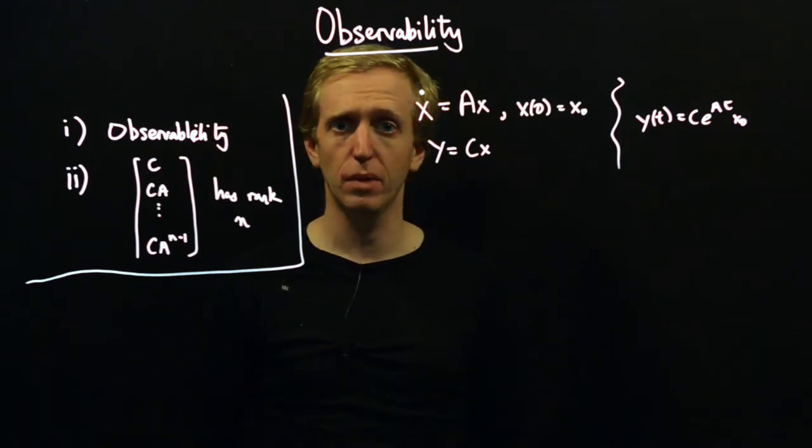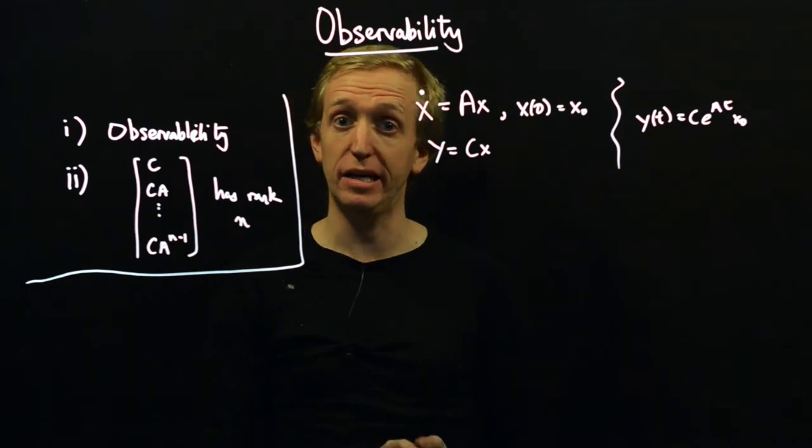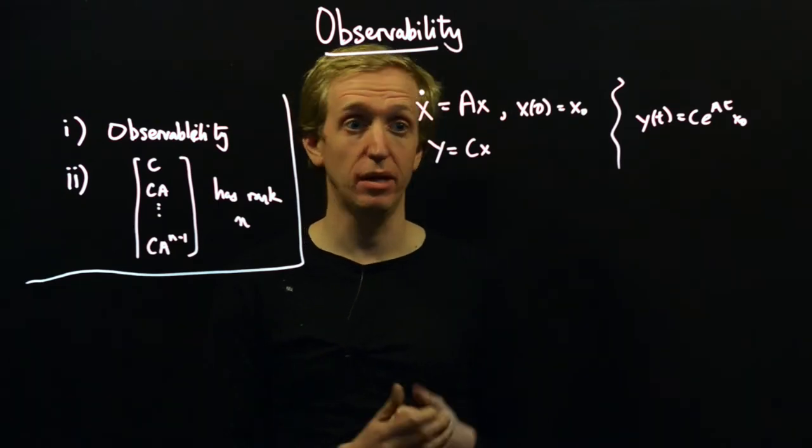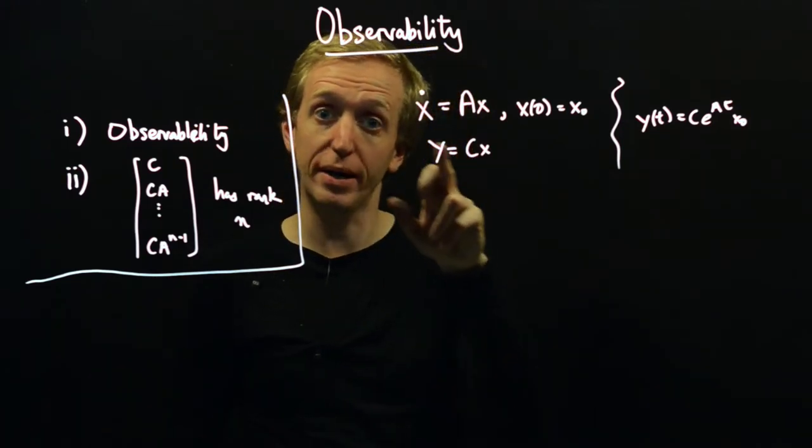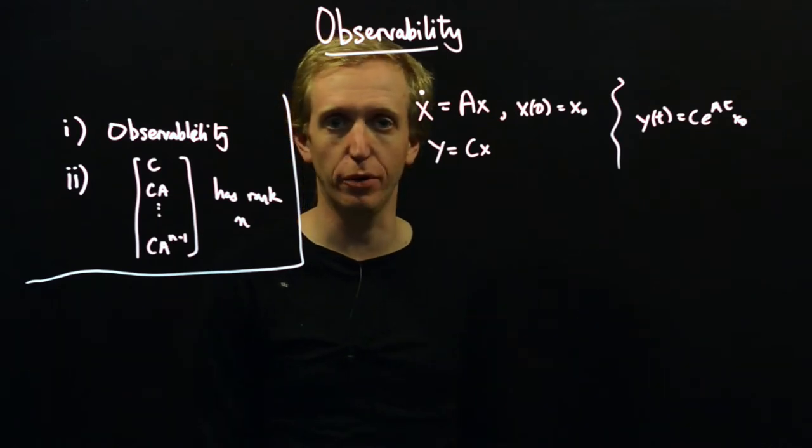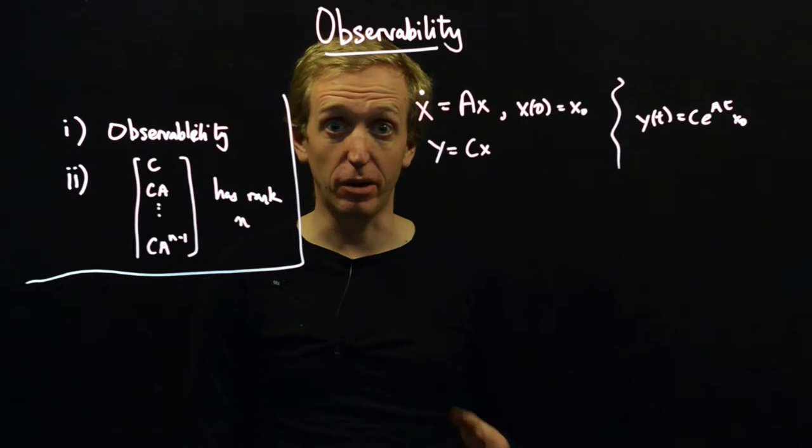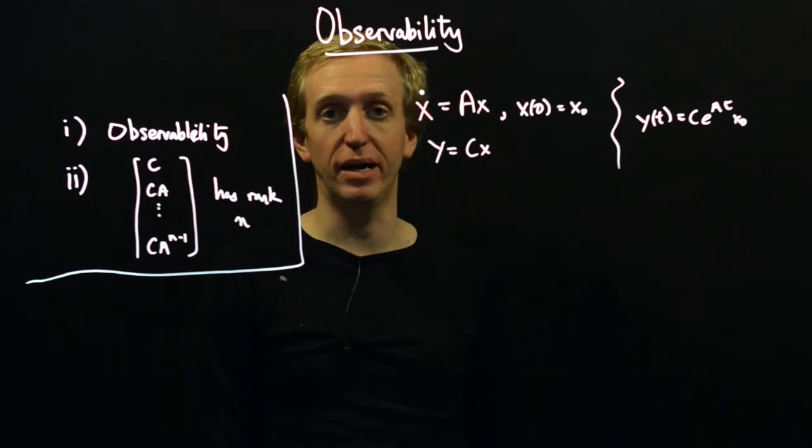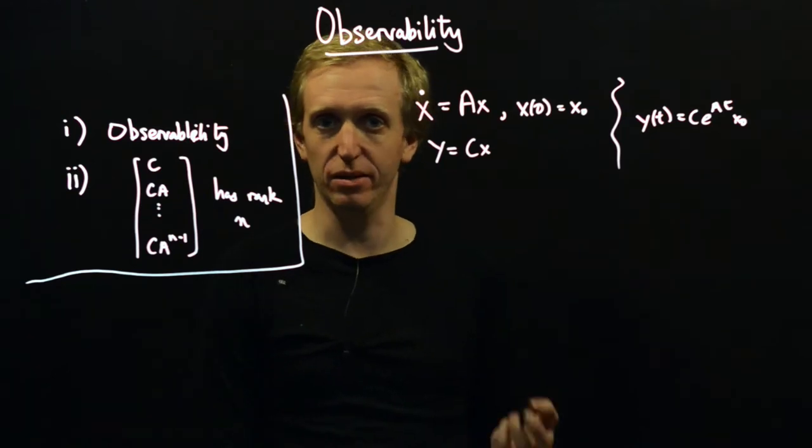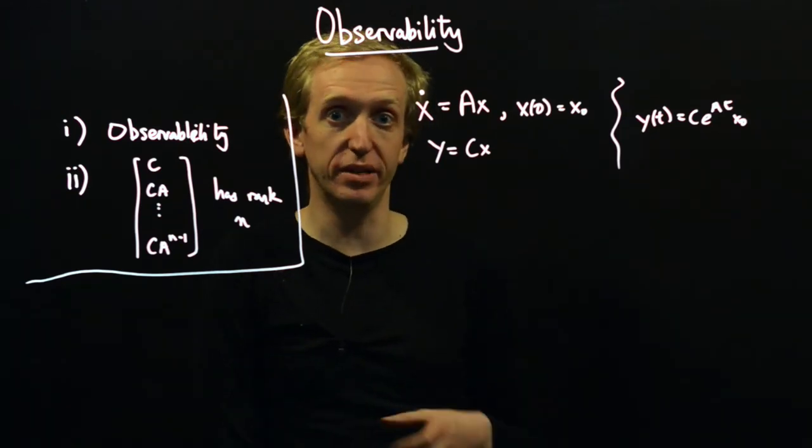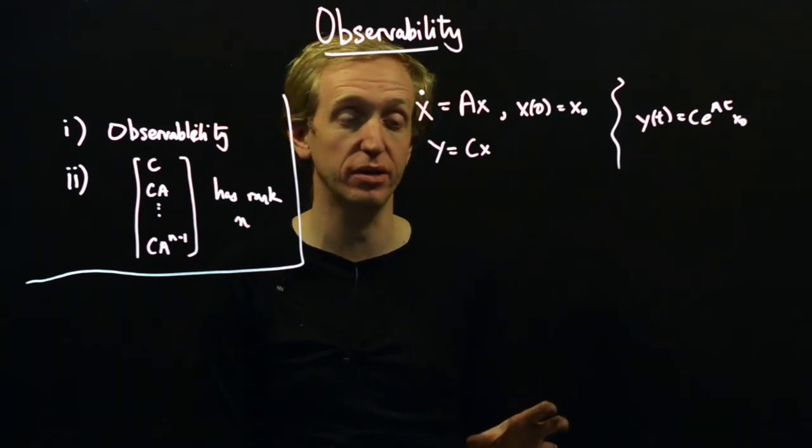So observability is all about being able to estimate the value of the state of a system at different points in time, based only on the output y. We talked a lot about this last time when we were designing our controllers using an observer and state feedback. It's the value of the state that we would really like to know. This encodes all of the information about the current configuration of our system.